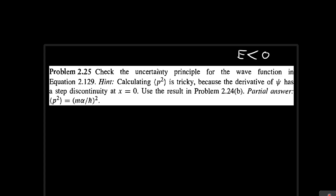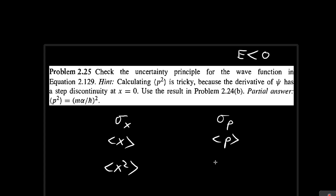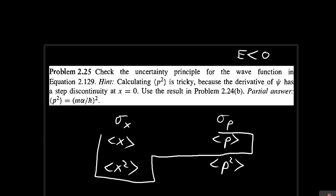To verify the uncertainty principle, we need to calculate the standard deviation of x and momentum. That means we need to find the expected value of x, the expected value of x squared, as well as the expected value of momentum, and the expected value of momentum squared. In this video, I'm going to focus on finding these three terms first.